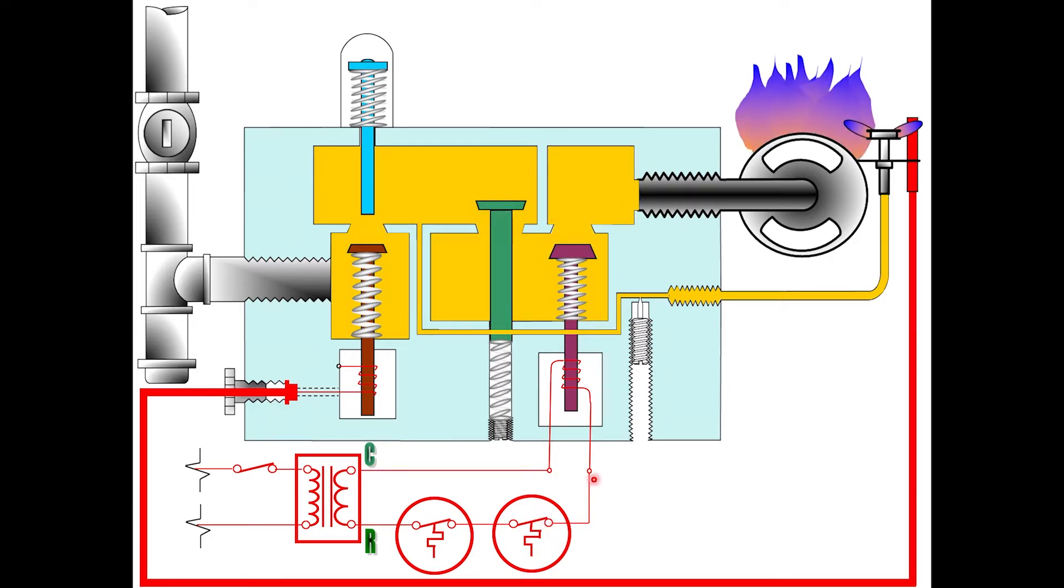So my switch closes, I get power to this. This is my solenoid portion of the gas valve. Now a solenoid just creates a small electromagnet which pulls a piece of metal down and in this case it's the actual solenoid valve that opened up to allow gas flow from the main chamber down through to the main burner.